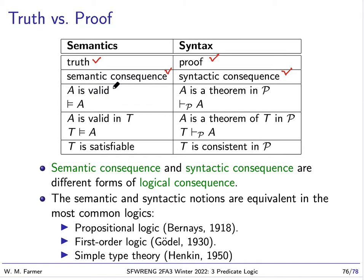Remember both semantic consequence and syntactic consequence are different forms of logical consequence. Then, if we say that A is valid, that means it's going to get a truth value of true in every model. That corresponds to A as a theorem in a proof system.